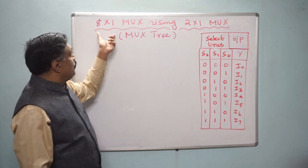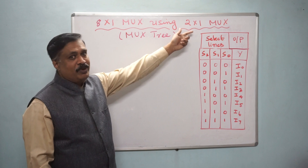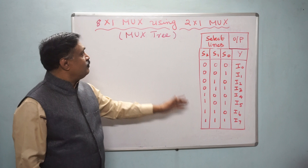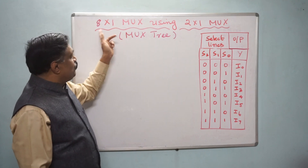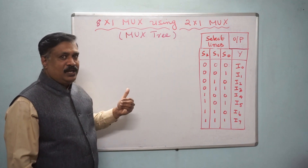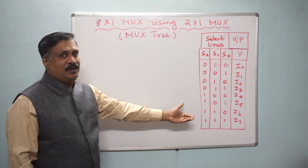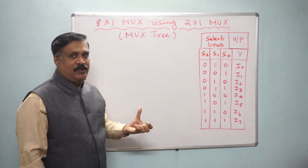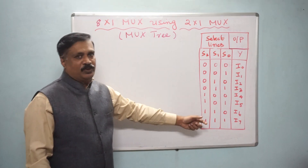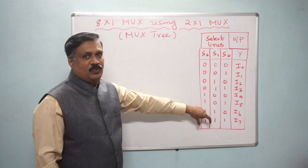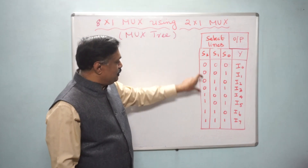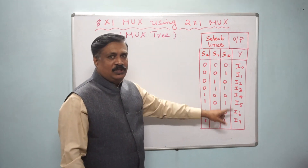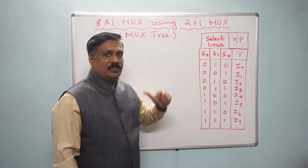Today, 8 by 1 MUX using 2 by 1. For that, this is the truth table for the 8 by 1 multiplexer. 8 by 1 means there are 8 inputs and one output, and the output will be one of the inputs. That means we are selecting any one of the inputs as output using select lines. These are all 8 possibilities of the select line — that is the concept of the multiplexer.